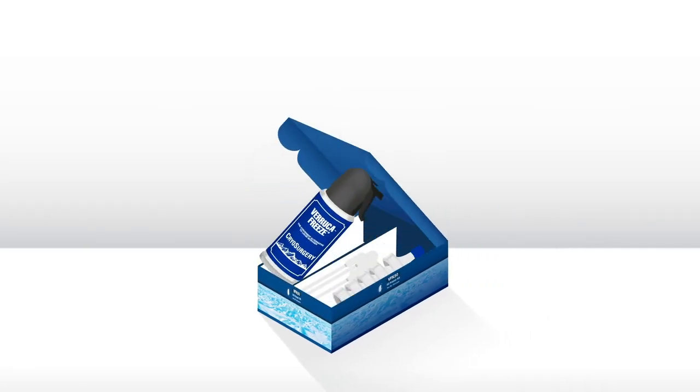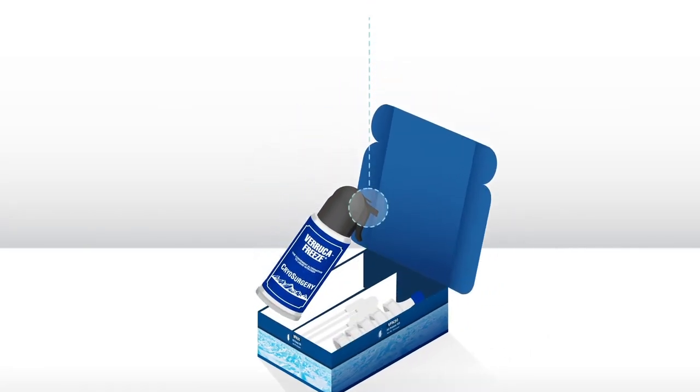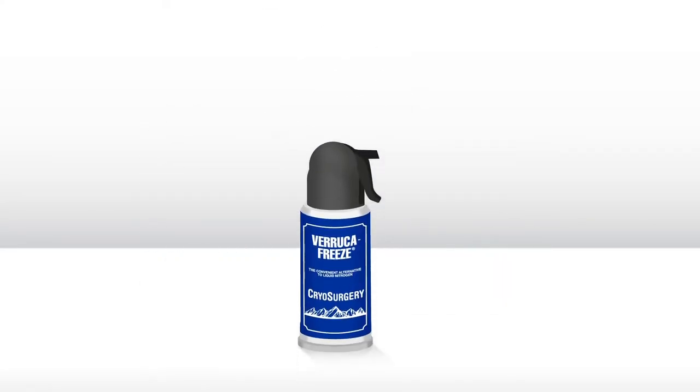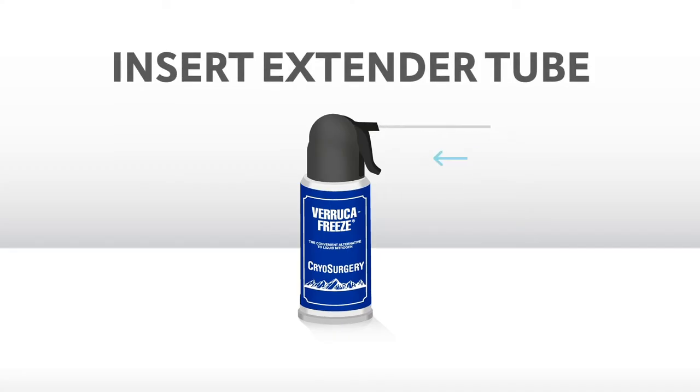Upon receiving your Veruca Freeze kit, inspect the canister. Remove the safety tab at the top of the nozzle by pulling upward. Insert the clear extender tube firmly into the nozzle.